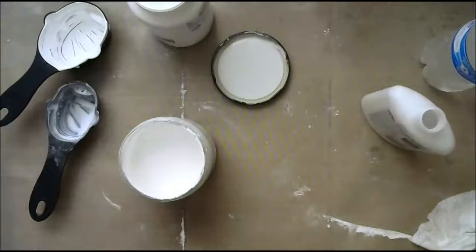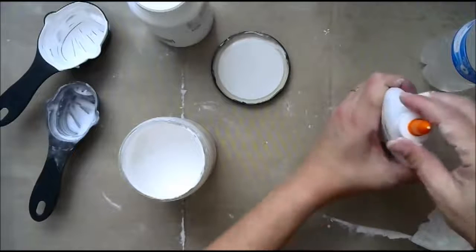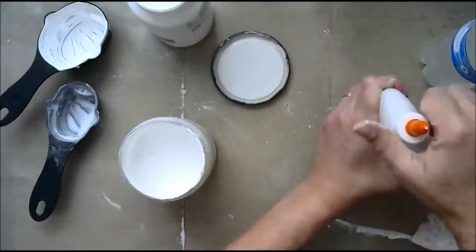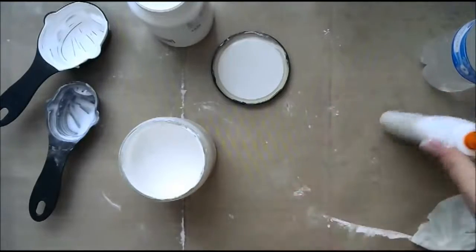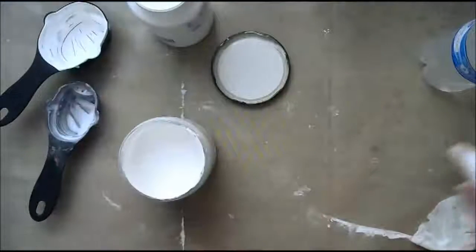So, that's it. That is my recipe for homemade gesso. Again, that is a quarter cup baby powder, a quarter cup water, a half a cup white paint, and a quarter cup of white glue. School glue. Just plain old school glue.